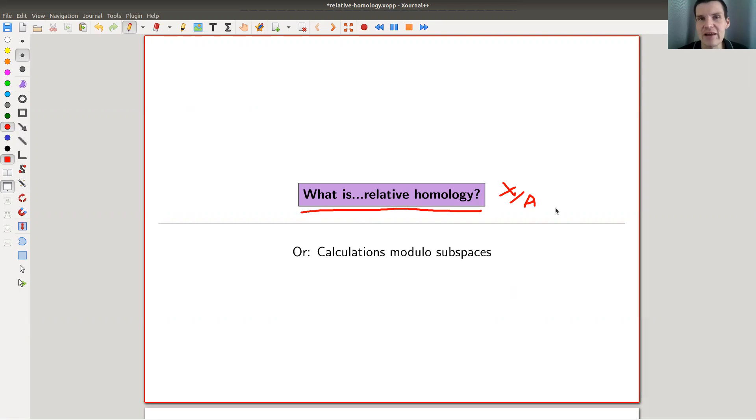So basically, you should think of it like, you have integers, and sometimes you really like to do modular arithmetic to say something about the integers themselves. It works surprisingly well, and the analog in homology is relative homology. That's what I'm going to explain today.